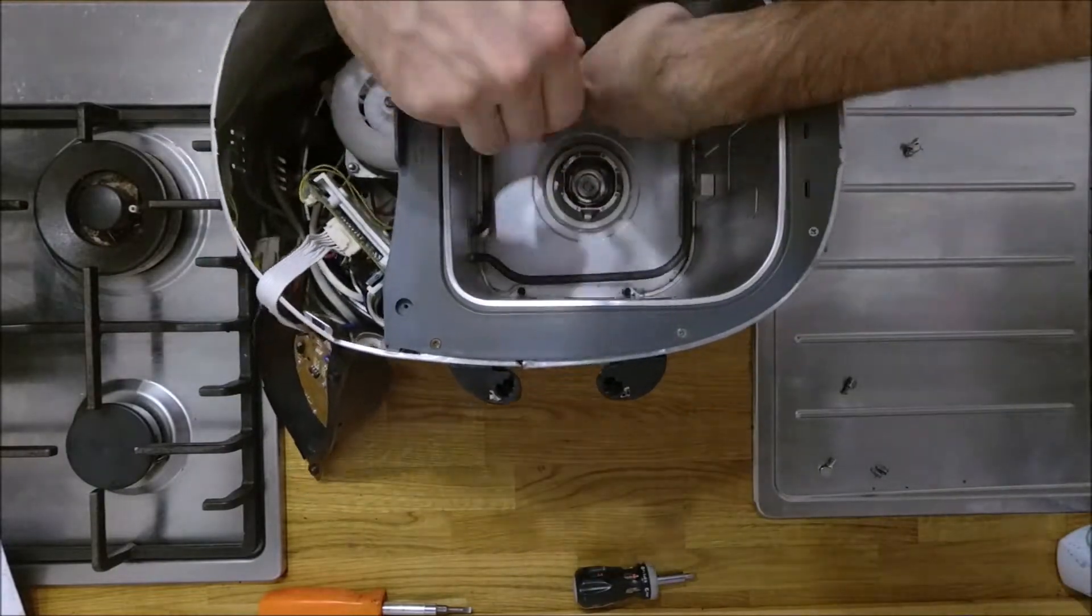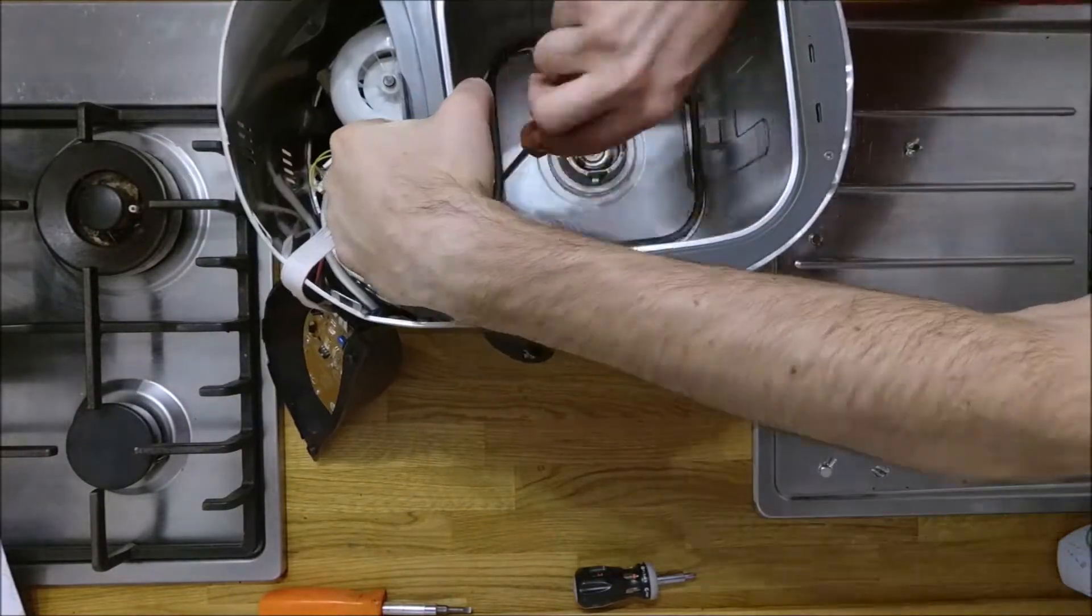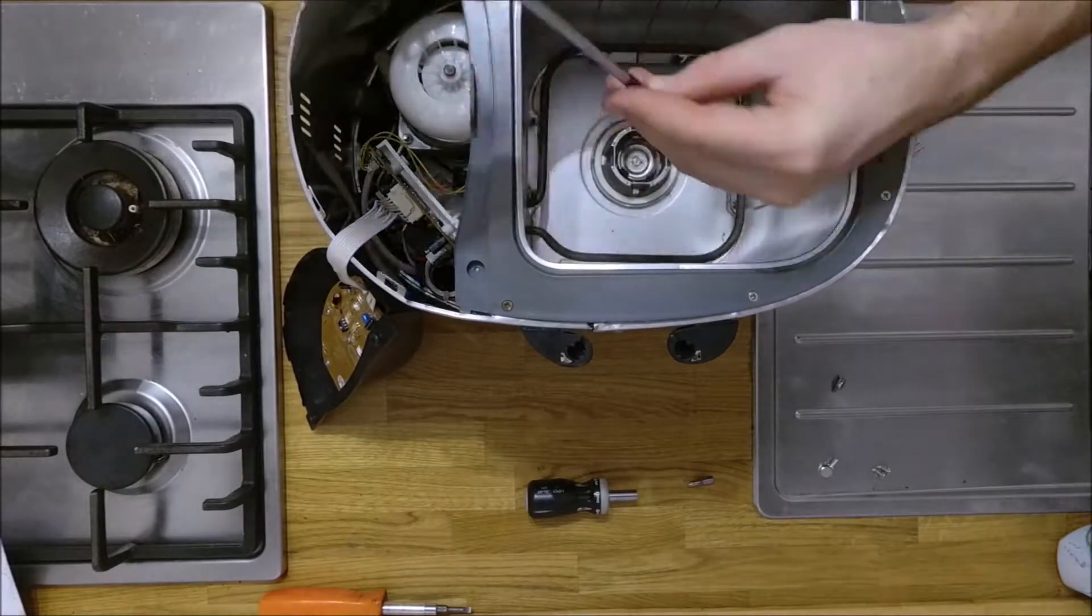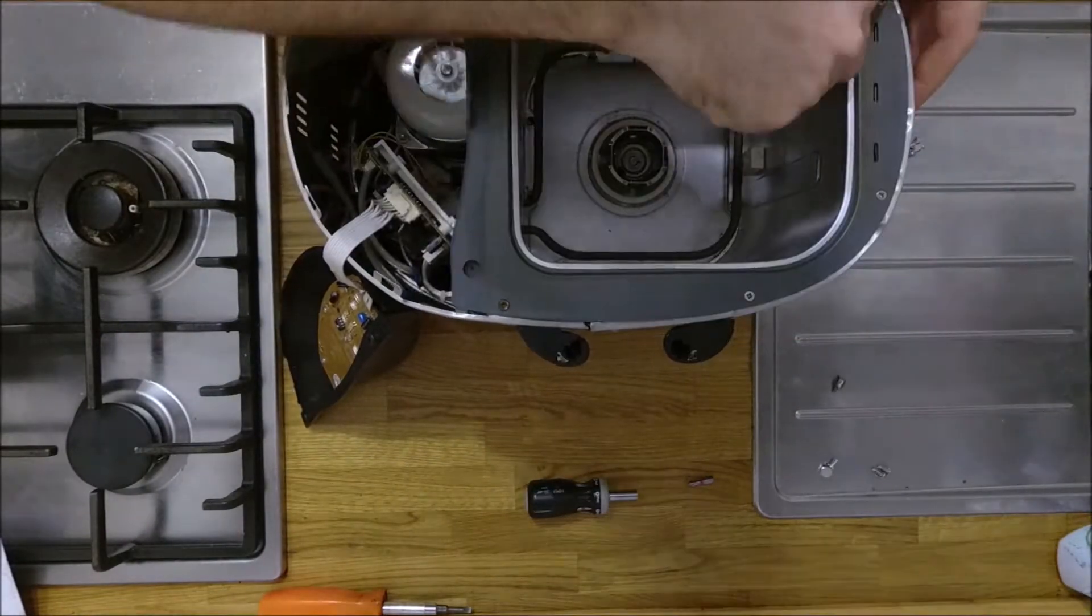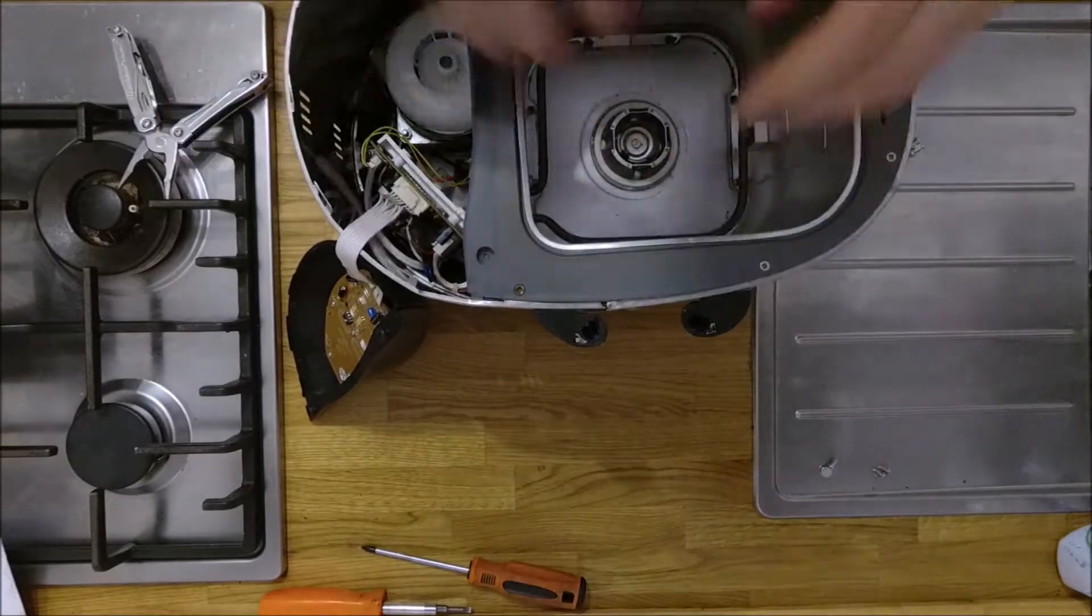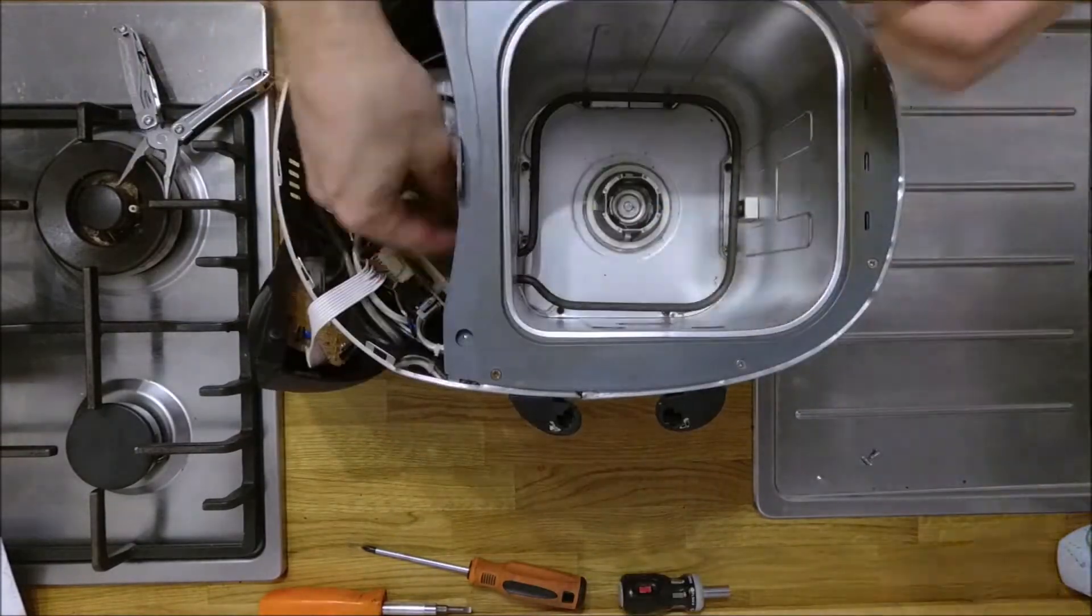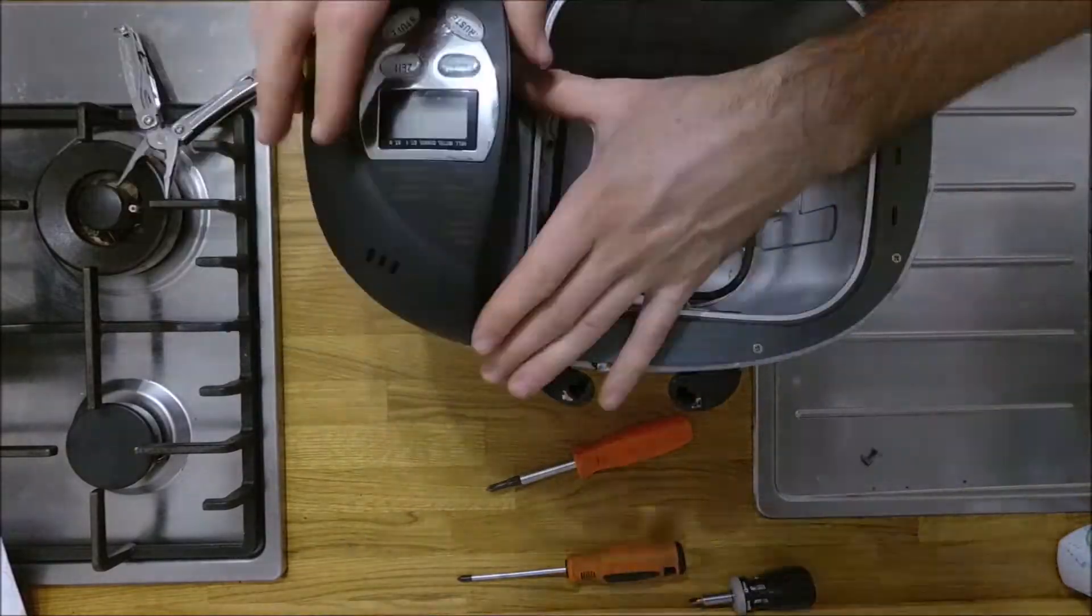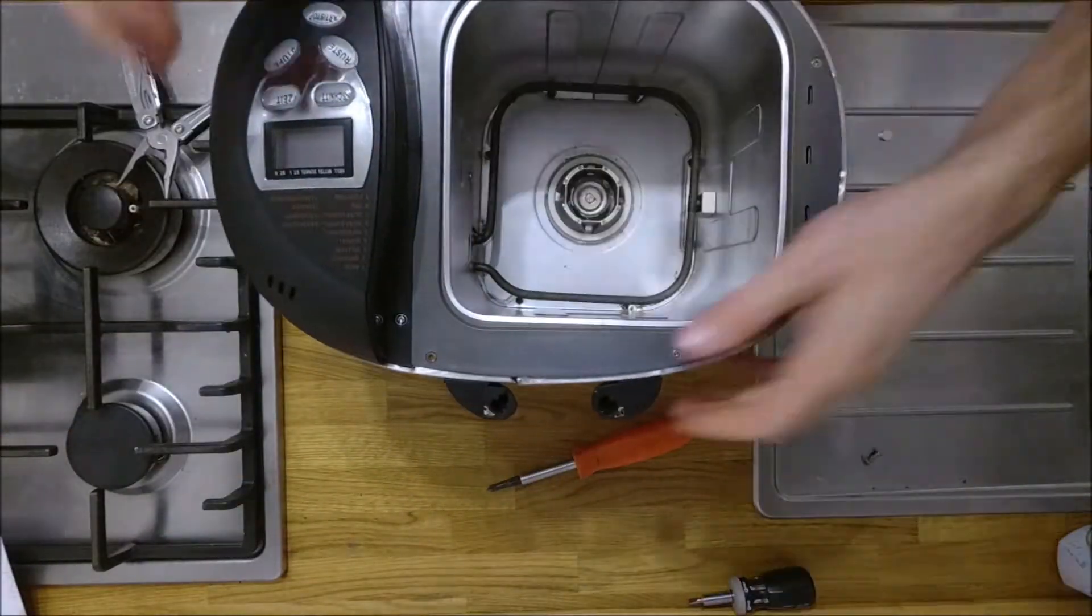Then you can secure the heat shield back to the base. Don't forget to reattach the heating coil and the other screw opposite of that. Then you can replace the electronics board and the lid.